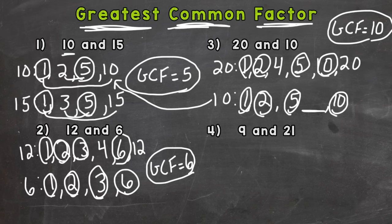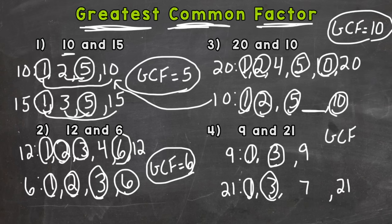All right, lastly, number 4. We have two odd numbers here, 9 and 21. So let's write our factors. For 9, we'll start with 1 and 9. And then is there anything else that we can multiply to get 9? Well, 3 times 3. So 3 is a factor. You only need to write 3 once, though. 21. We'll start with 1 and 21. Now, are there any factors of 21 other than 1 and 21? Yes. 3 times 7. So there are our factors for 9 and 21. They have 1 in common, and they also have 3 in common. So the GCF, or greatest common factor, is going to be 3.